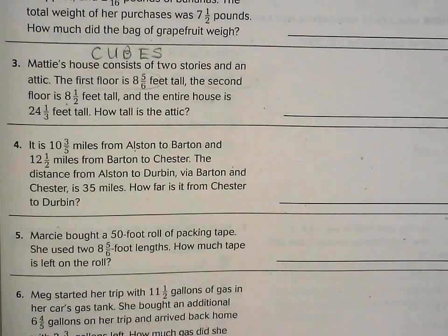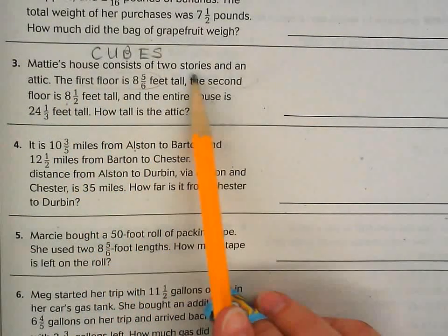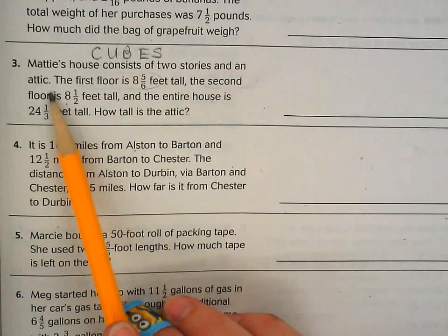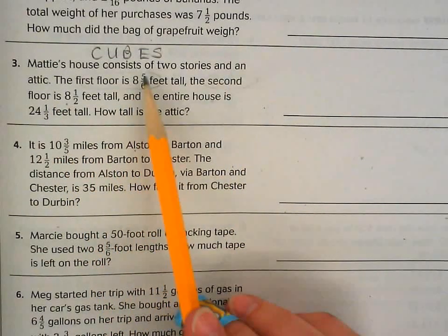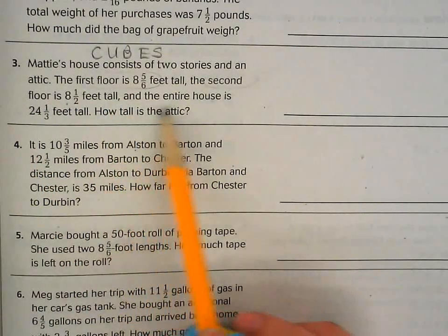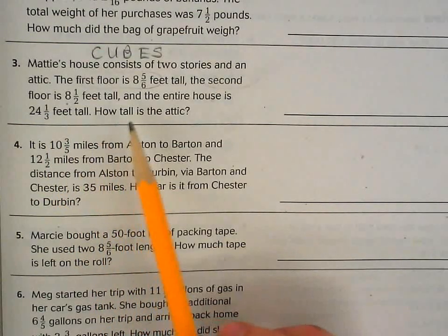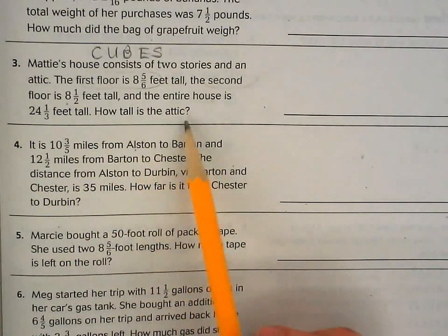Let's look at number three. I'm going to start by reading the word problem. Mattie's house consists of two stories and an attic. The first floor is 8 and 5/6 feet tall, the second floor is 8 and 1/2 feet tall, and the entire house is 24 and 1/3 feet tall. How tall is the attic?